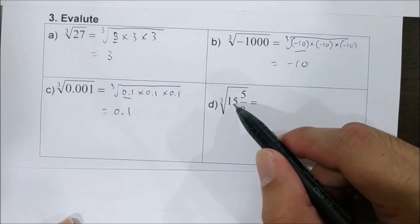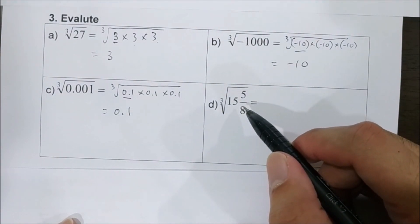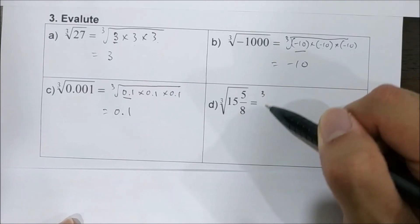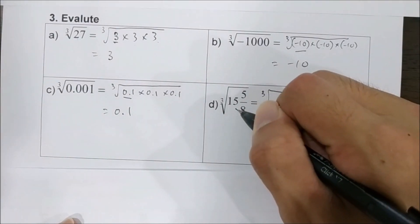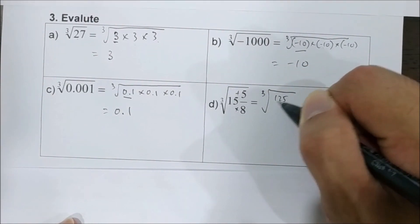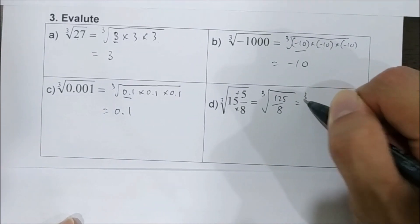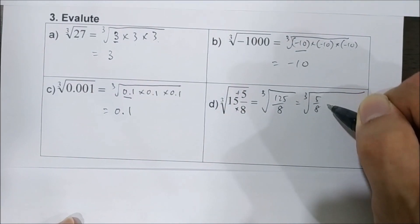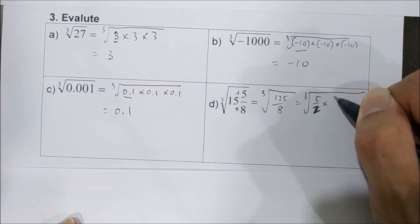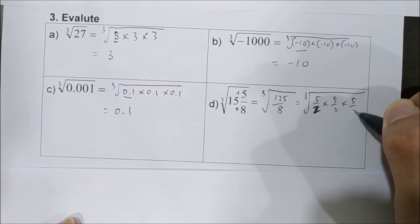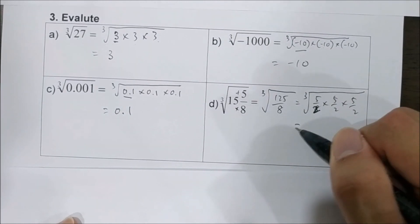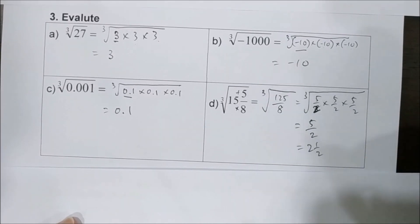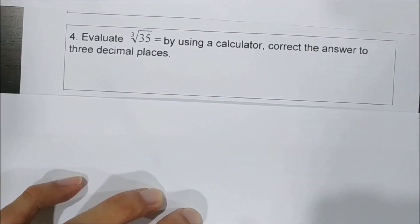For mixed numbers, we always change them to improper fractions first. So it becomes the cube root of 125 over 8, which equals 5 over 2 times 5 over 2 times 5 over 2, giving the answer 5 over 2, or 2 and 1 over 2.